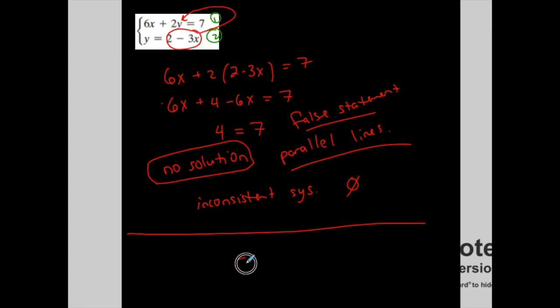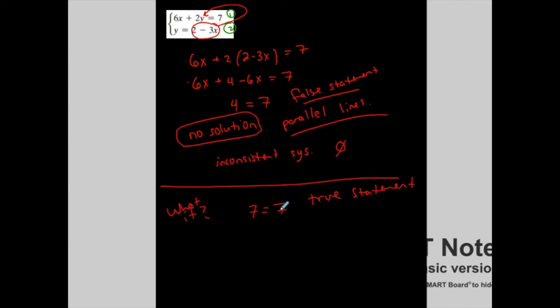If I got 7 equals 7, variables canceled but I got a true statement. That implies the two equations are the same, and this shows me that I get infinite solutions. This is the situation where I have the same line.